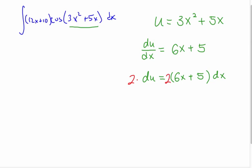So let's multiply everything times 2. I'll put 2 over here. So I can see that 2 du is the 12x plus 10 dx. So now I can do a direct substitution. That 12x plus 10 dx is the same as 2 du.